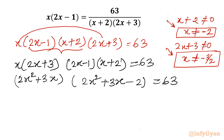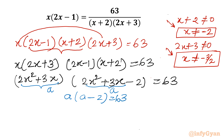The easiest method from this point is to substitute a equal to 2x squared plus 3x. Once we do that, the equation becomes a times (a minus 2) equal to 63, which gives us a squared minus 2a minus 63 equal to 0.